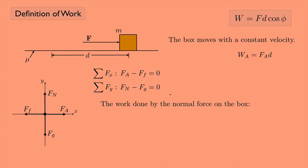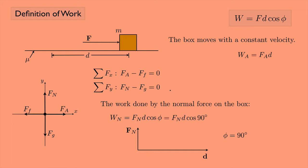The work done by the normal force W_n equals F_n times D times the cosine of phi. The normal force points straight up and the displacement points horizontally, so the angle between them is 90 degrees. The cosine of 90 degrees is zero, so the normal force does no work.